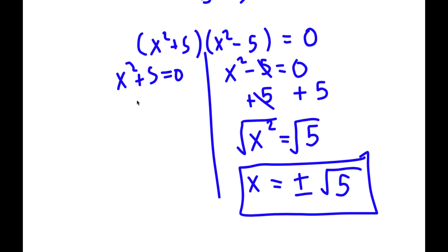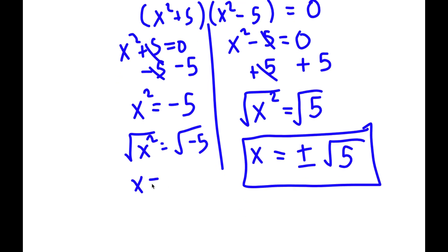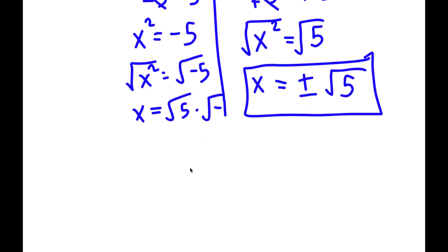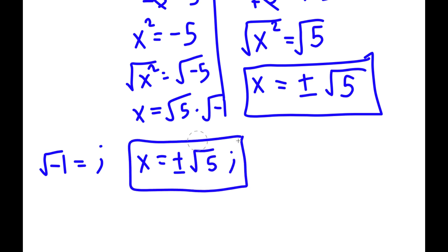Now for x squared plus 5 is equal to 0, I'm going to subtract 5 on both sides, so x squared is equal to negative 5. Taking the square root on both sides, the square root of negative 5 can be written as the square root of 5 times the square root of negative 1. The square root of negative 1 is equal to i, so x is equal to positive or negative square root of 5 times i. So these are my four solutions.